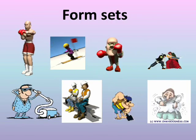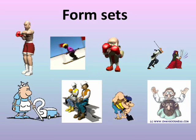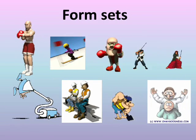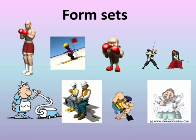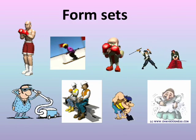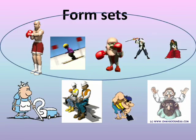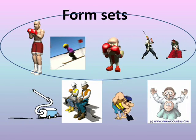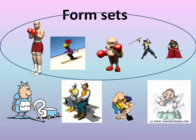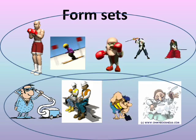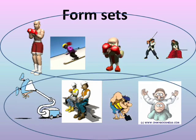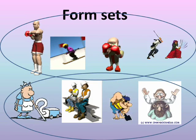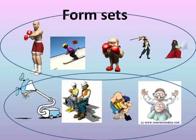Again, form sets. First set: make a circle around the sports pictures — the four pictures on top are about sports. The four pictures on the bottom are about workers. We have two sets.